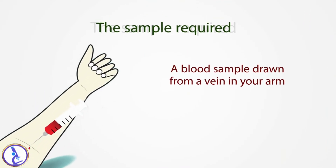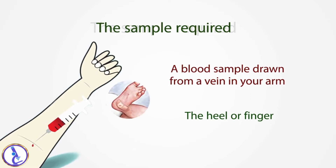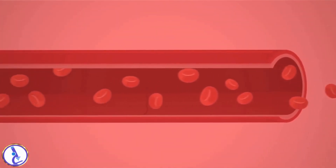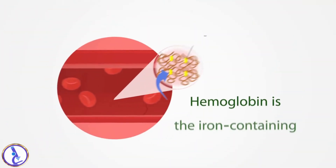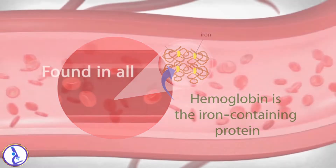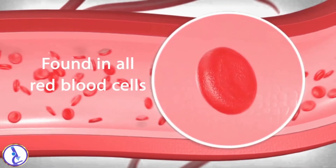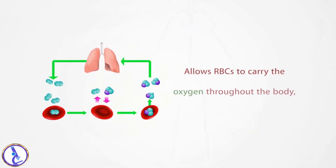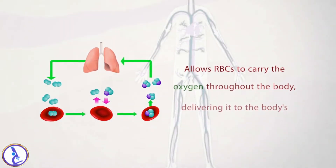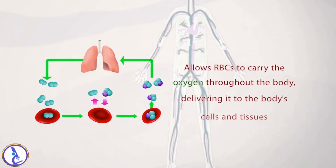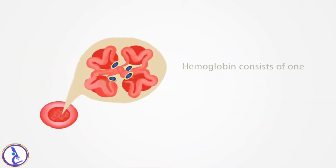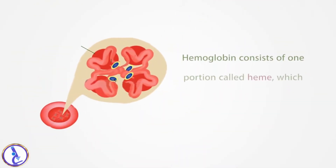The sample required is a blood sample drawn from a vein in your arm, or obtained from the heel or finger of an infant. Hemoglobin is the iron-containing protein found in all red blood cells that binds to oxygen in the lungs and allows RBCs to carry the oxygen throughout the body, delivering it to the body's cells and tissues.